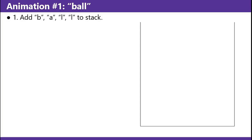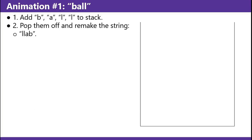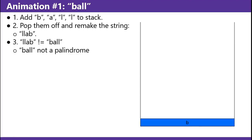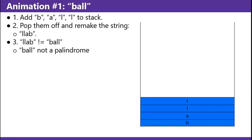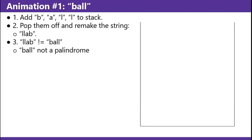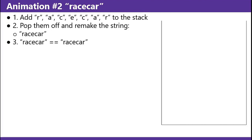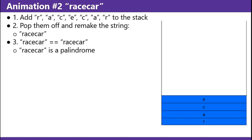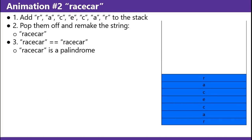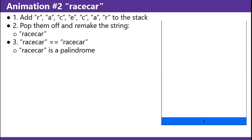Animation 1 — Ball: add B-A-L-L to the stack, pop them off, remake the string, and you'll get L-L-A-B. L-L-A-B doesn't equal Ball — Ball is not a palindrome. Racecar: add R-A-C-E-C-A-R to the stack, pop them off, remake the string. Racecar does equal racecar — racecar is a palindrome.